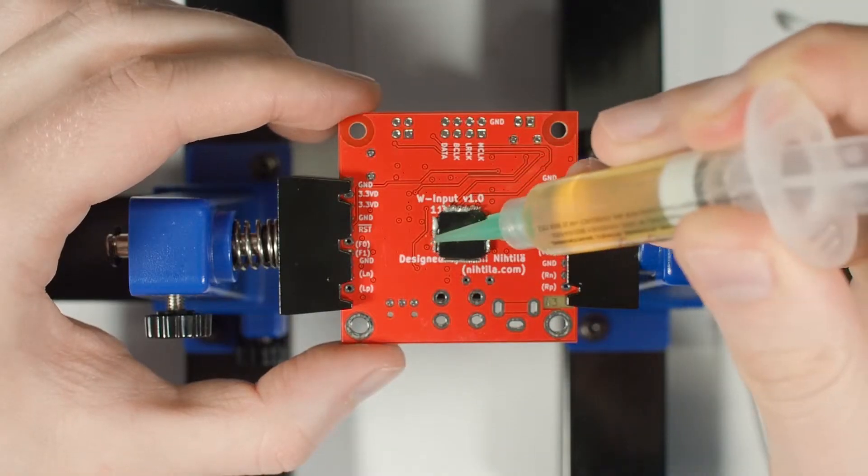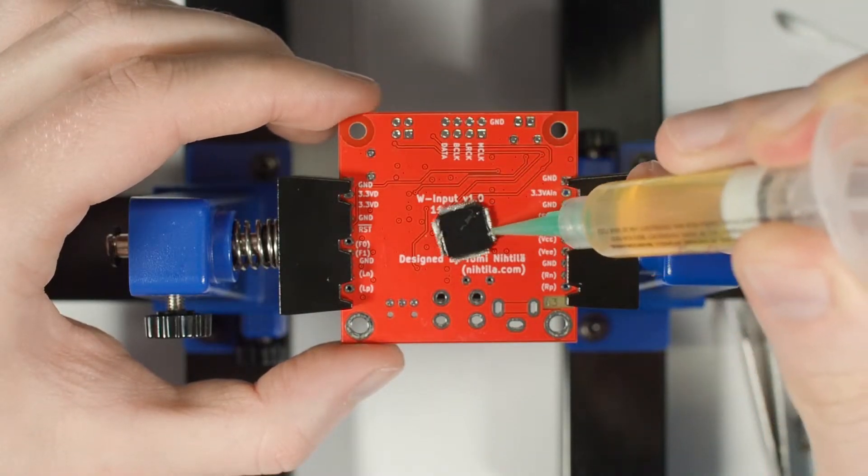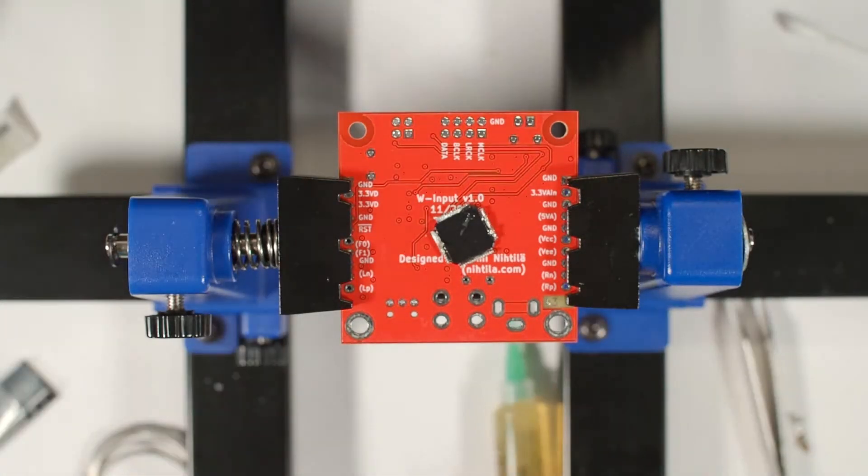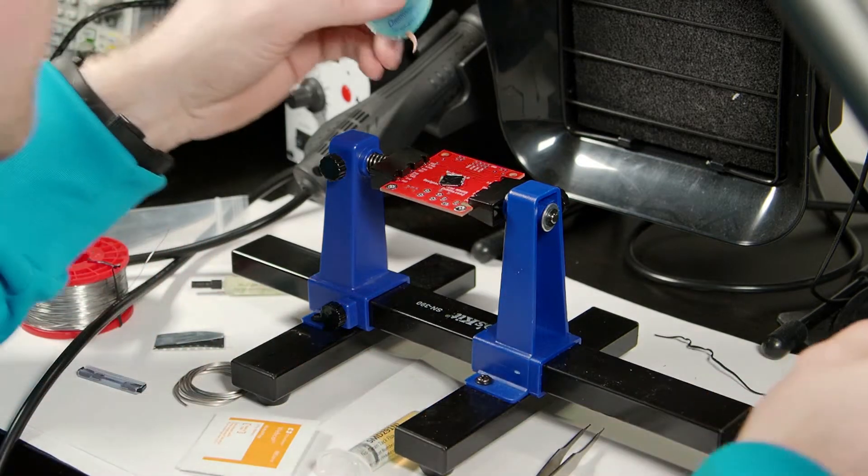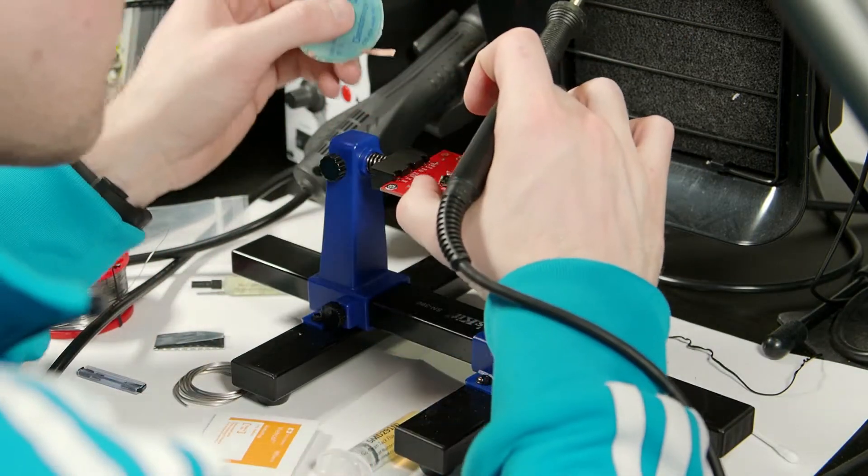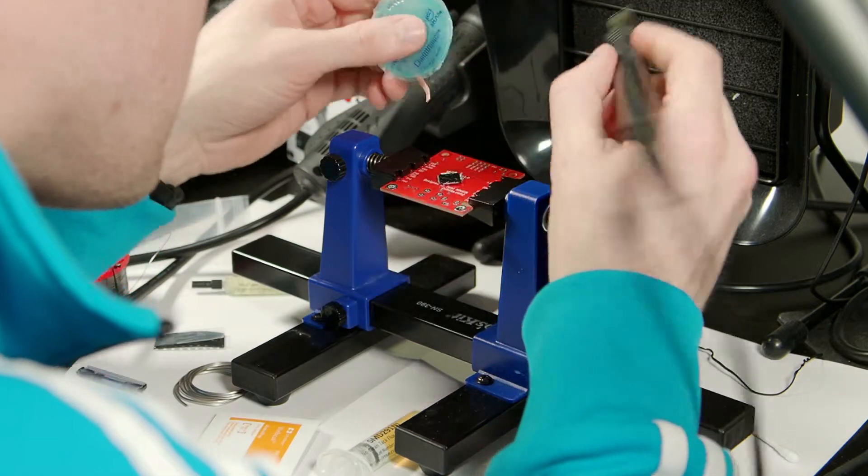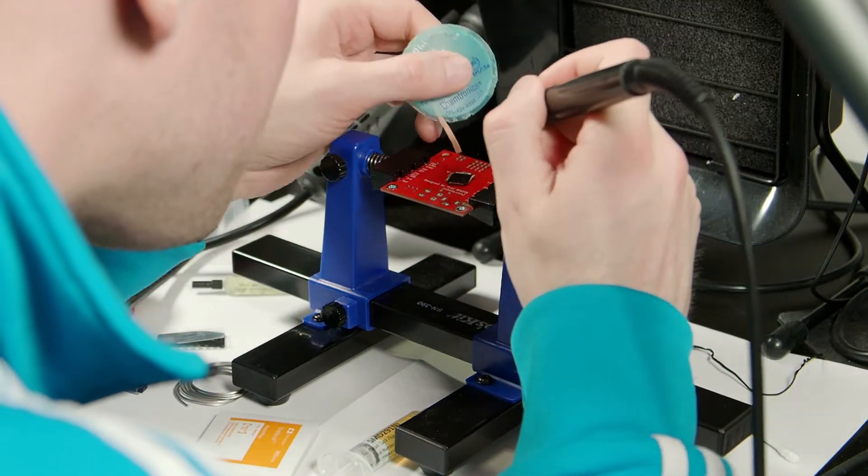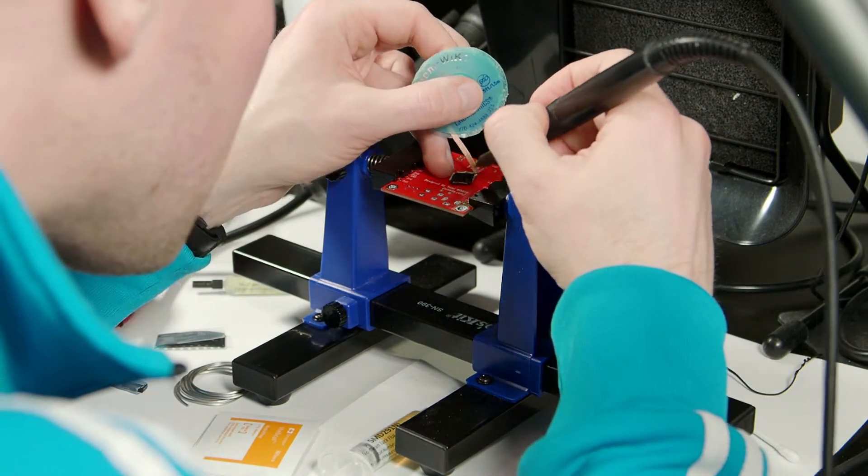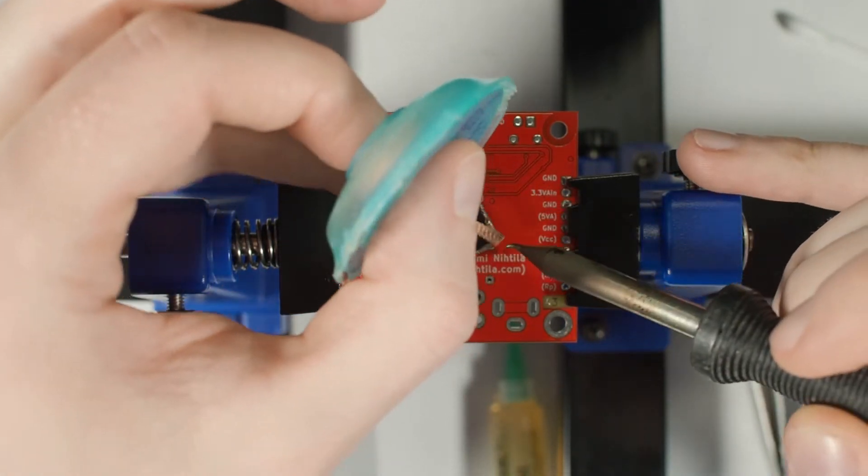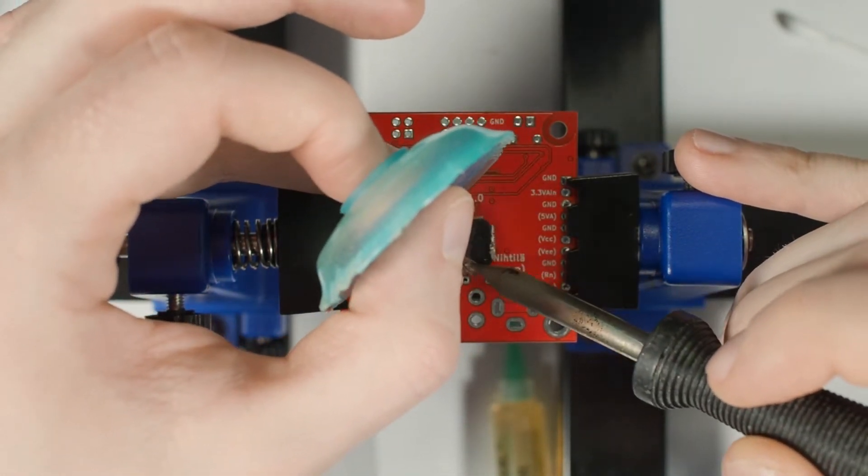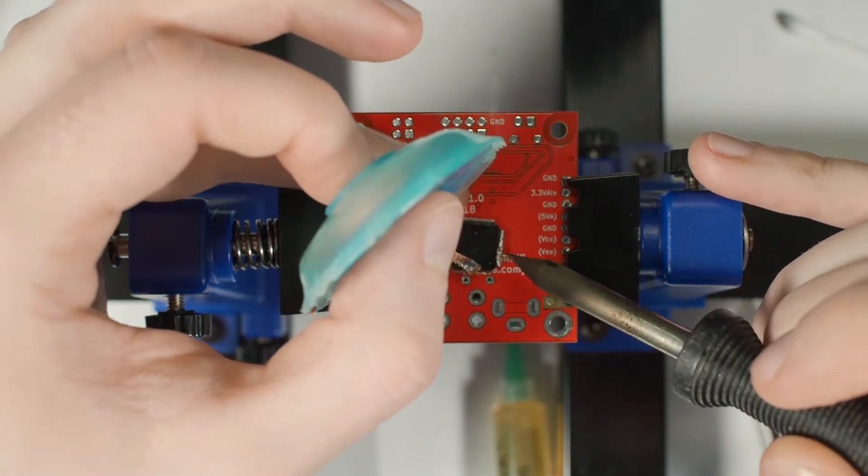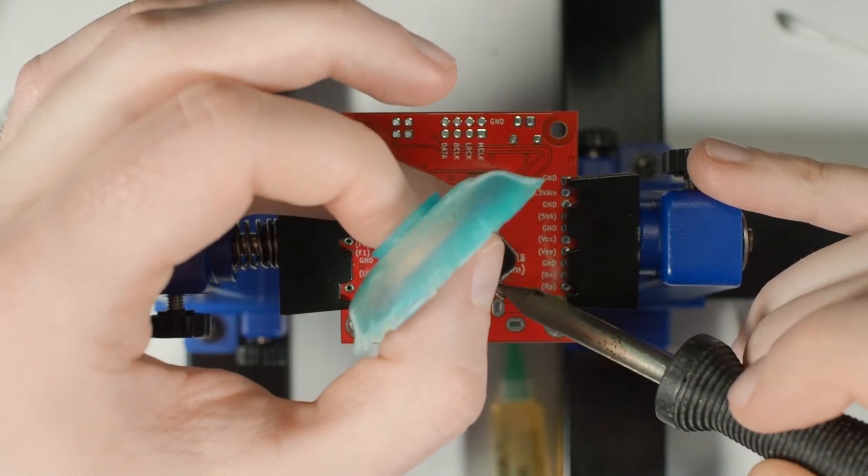So again, just put a bit of flux there. Because otherwise when you're gonna solder it on the next board that thin compound just sticks everywhere. So just keep it still somehow. So it does get away quite easily.